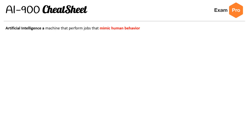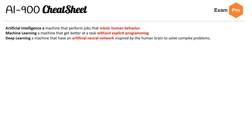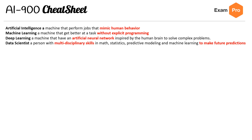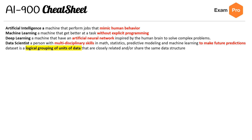At the top of our list, starting with artificial intelligence — a machine that can perform jobs that mimic human behavior. Machine learning: a machine that gets better at a task without explicit programming. Deep learning: a machine that has artificial neural nets inspired by the human brain to solve complex problems. A data scientist is a person with multidisciplinary skills in math, statistics, predictive modeling, and machine learning to make future predictions. A dataset is a logical grouping of units of data that are closely related or share the same data structure.